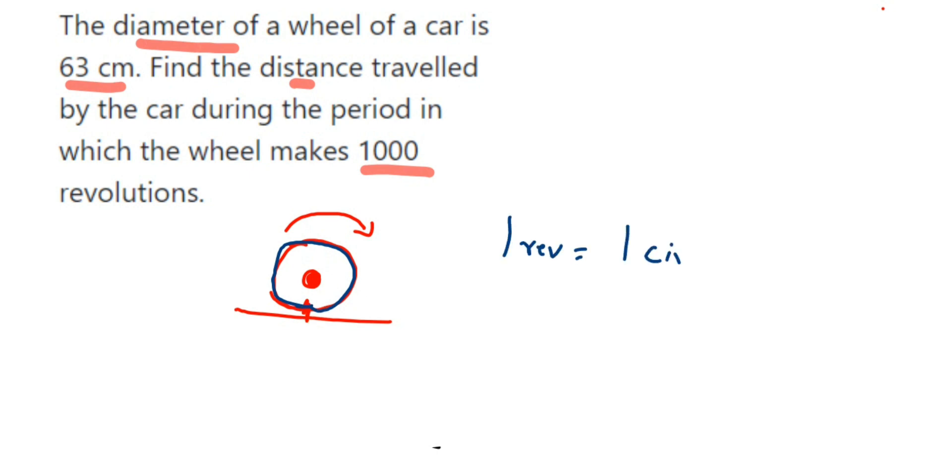Here, for one revolution or one rotation, it will be equal to one circumference of the wheel. So for thousand revolution, that is for thousand rotation, how much will be the distance? First we are going to find out the circumference of the wheel and then later we are going to multiply with 1000.